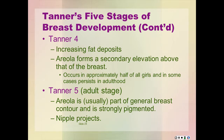Tanner stage four is evidenced by increasing fat deposits. The areola forms a secondary elevation above that of the breast. This secondary mound occurs in approximately half of all girls and in some cases persists in adulthood. Tanner stage five is the adult stage: the areola is usually part of the general breast contour and is strongly pigmented, and the nipple projects.